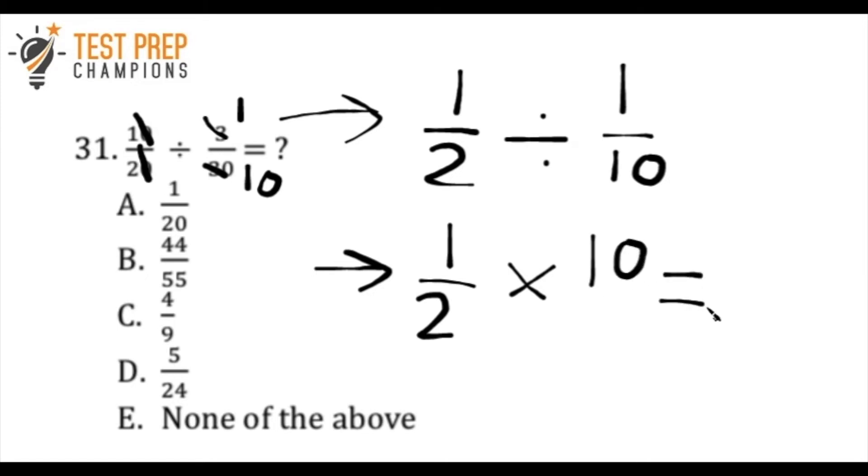So 10 over 1 is just the same as 10, so we don't need to write the 1. Then you multiply fractions by going right across. So that's 1 times 10. 1 times 10 is 10. And remember, I said we didn't need to write the 1 down here, but you could think of it as 2 times 1, which is just 2. And 10 over 2 is the same as 10 divided by 2, which is 5. And I don't see that as an answer choice here. And it turns out that E, none of the above, is the correct answer here.